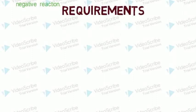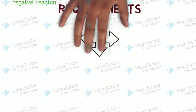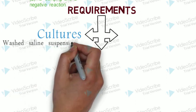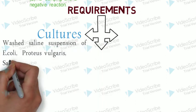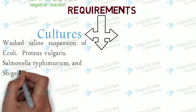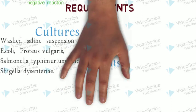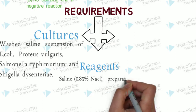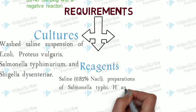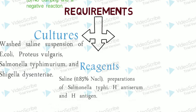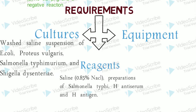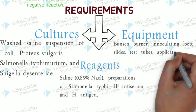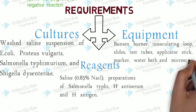Requirements: First, cultures — saline suspensions of E. coli, Proteus vulgaris, Salmonella typhimurium, and Shigella dysenteriae. Reagents — 0.85% NaCl saline, preparations of Salmonella typhimurium H antiserum and Salmonella typhimurium H antigen. Equipment — Bunsen burner, inoculating loop, slides, test tubes, applicator stick, marker, water bath, and microscope.